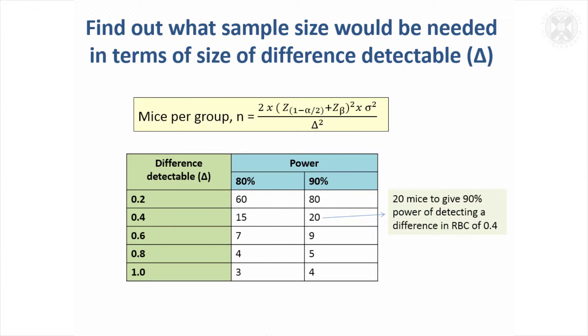Another useful thing to do is look at different scenarios, so look at different sizes of difference that might be detected. We just looked at 0.5, but you might want to think, well, if the difference was this big or 0.2 or if it was one, how many mice per group would I need? You can look at what you need for different levels of power.